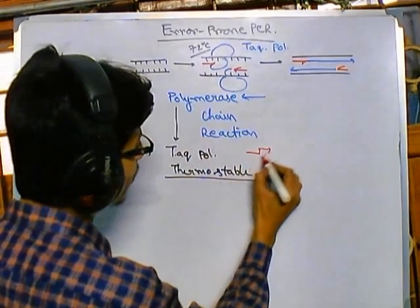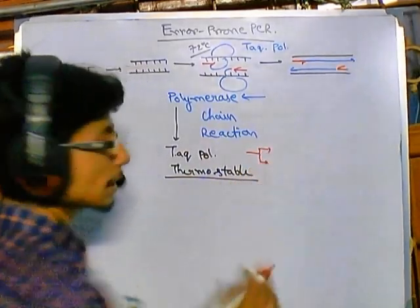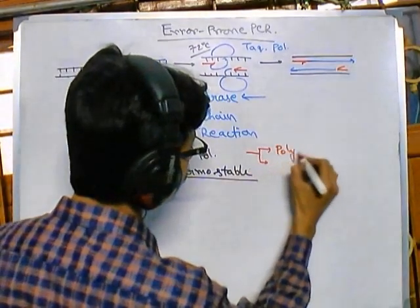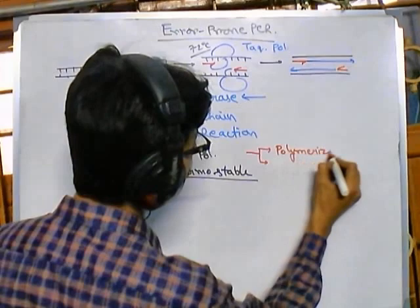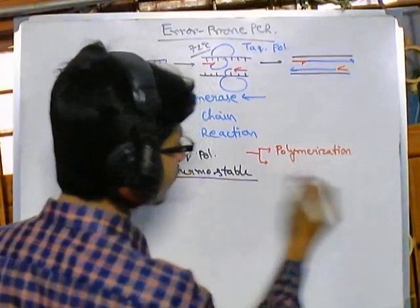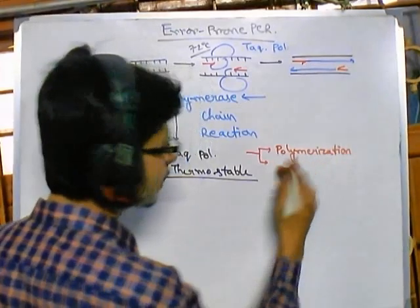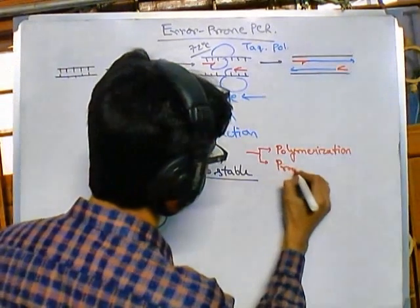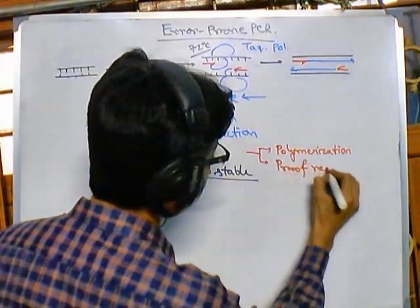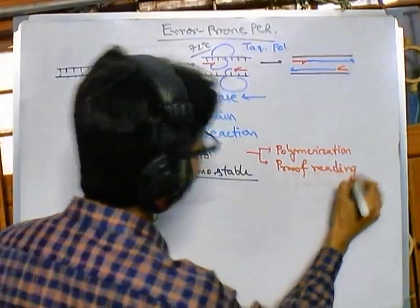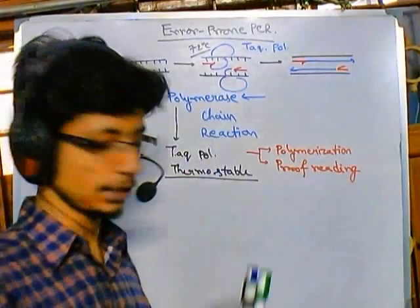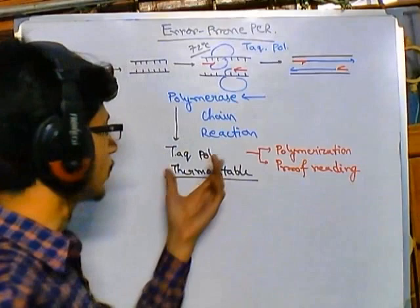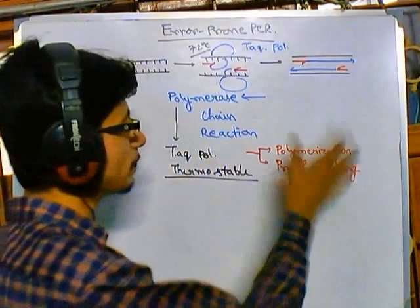Taq polymerase has two activities which are common features of polymerase enzymes: one is polymerization, and another is the rectification of polymerization which is called proof reading. So these two activities — proof reading and polymerization — are present in basic polymerase enzymes including Taq polymerase.